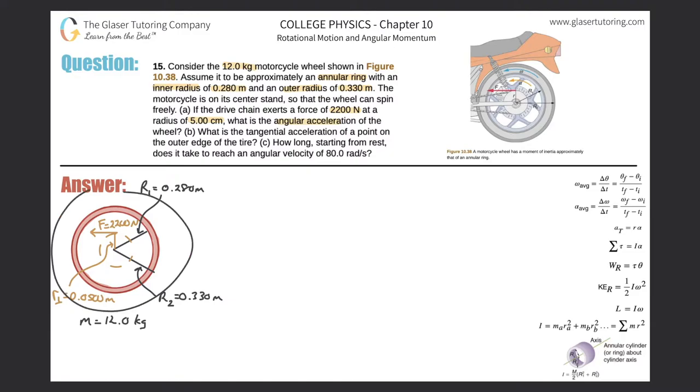Letter A. The drive chain exerts a force of 2200 newtons at a radius of 5 centimeters. What is the angular acceleration of the wheel? Alright. So here's a little picture, right? An annular ring is basically what it shows - this particular wheel here where there's mass located at a certain distance relative to the axis of rotation.